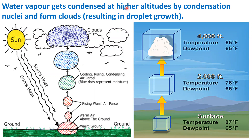Water vapor gets condensed at higher altitudes by condensation nuclei and forms clouds, resulting in droplet growth. Since water plays a major role in weather and climate, it is important to understand the hydrologic cycle. The change in one component can affect weather — for example, a decrease in cloud cover over land during a day allows more solar energy to reach the surface and warm the ground and the atmosphere above.